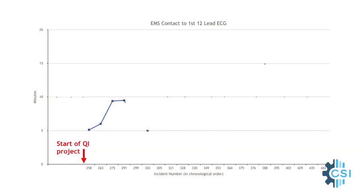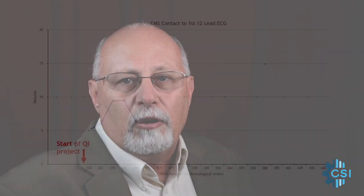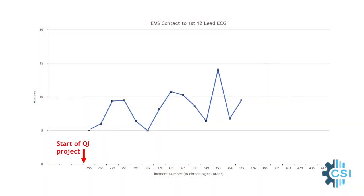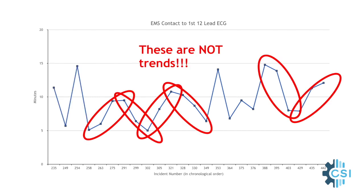These new electrodes are supposed to make the process of getting a 12-lead in the field go much faster than with conventional electrodes, and it's being conducted as a QI project to reduce the EMS contact to first 12-lead interval. After collecting just the first four data points, the medical director sees that the time is actually getting longer, not shorter. He's ready to call the QI project off. But letting the run chart data continue reveals that those first few data points did not meet the definition of a trend — it was all just normal process variation.